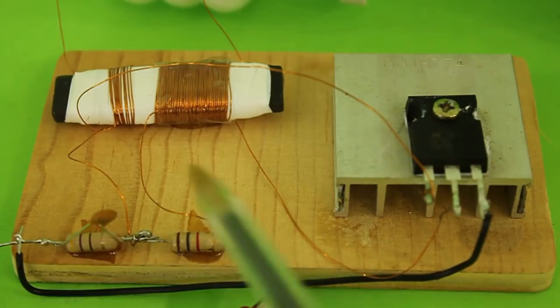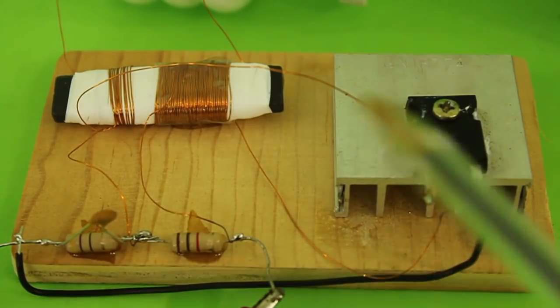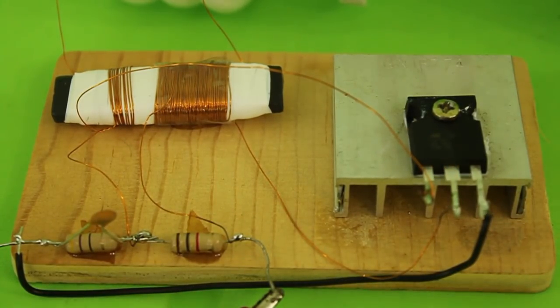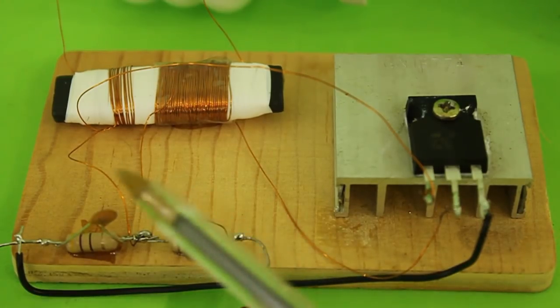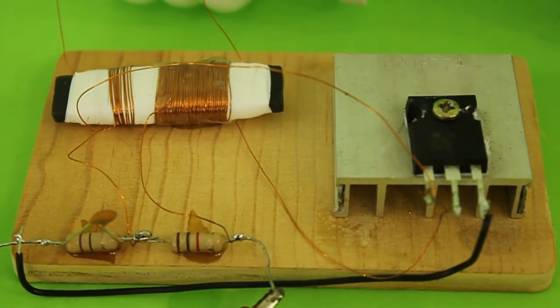The polarity of the feedback coil is important. If you build the circuit and the lamp does not turn on, just swap the two wires of the feedback coil and that should solve the problem.